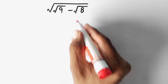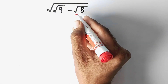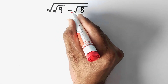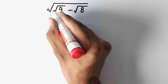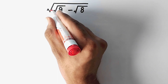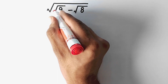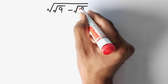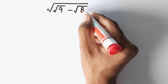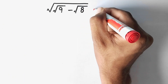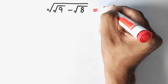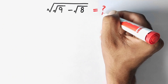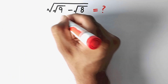Hello everyone. Today we have to solve this Olympiad math problem: square root of (square root 9 minus square root 8) is equal to what? Let us see the solution.